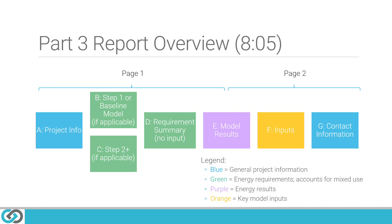Section 2 is an overview of the Part 3 report itself. This lays out the main features and familiarizes you with the overall content. For example, we'll go into detail on the image on your screen which lays out the seven main sections of the report and groups them based on what information is asked in each section.